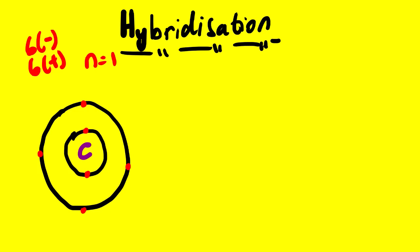In Lesson 101 we covered how to draw the Lewis dot diagram of an element or atom. The Lewis dot diagram of carbon will look like this — we only represent the valence electrons, which are the electrons found on the outermost energy level of an atom. This is the Lewis dot diagram of carbon. Now with this information, let us talk about how elements bond in order for us to understand hybridization.